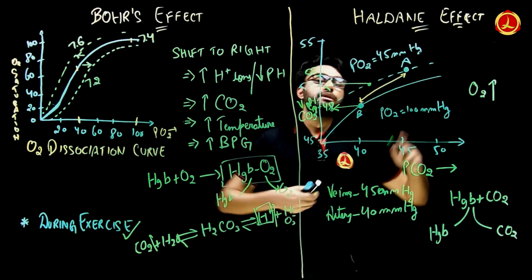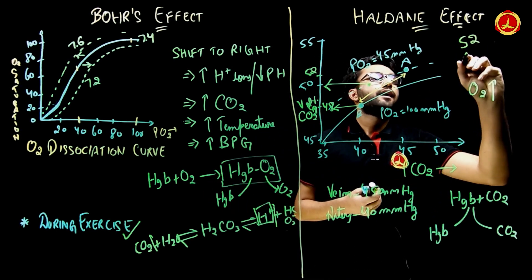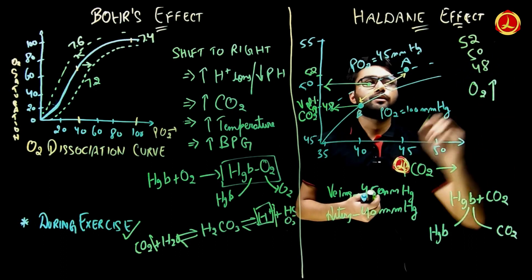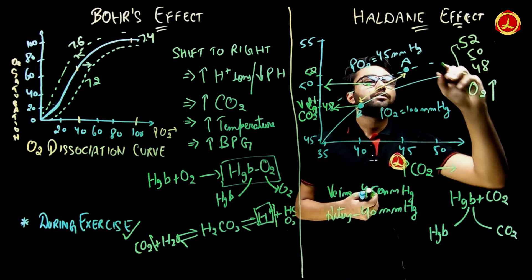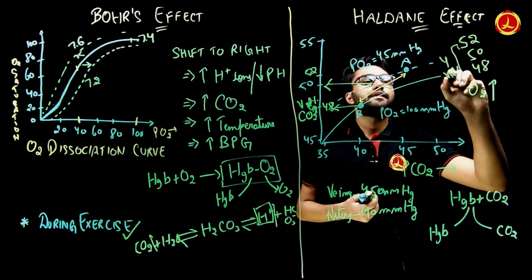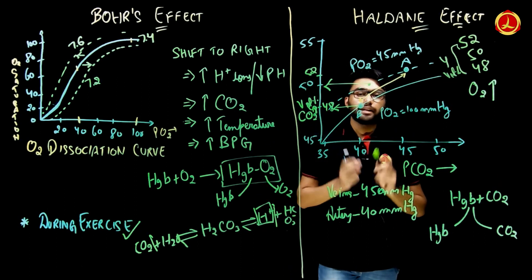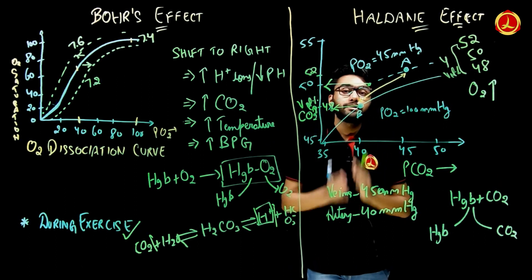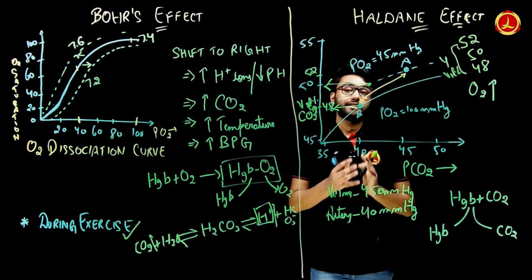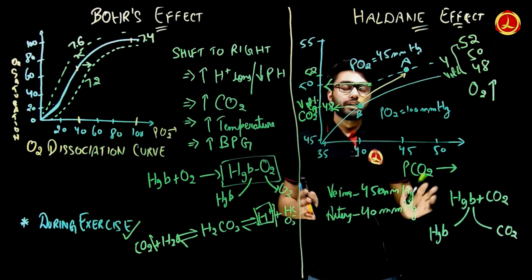So normally it was 52%, without the Haldane effect it would be 50%, and with the Haldane effect it is 48%. That is a 4 volume percentage difference, which is very important for the expiration of carbon dioxide from the lungs.